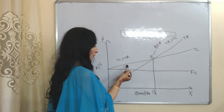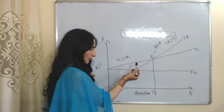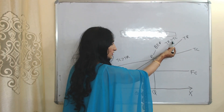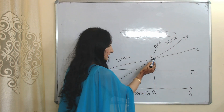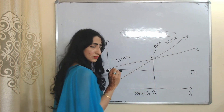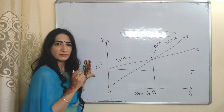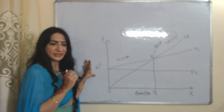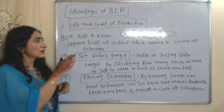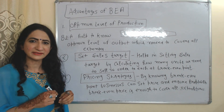Before point E, you can see total cost is more than total revenue. After point E, total revenue is more than total cost. But at point E, total revenue is just equal to total cost — that is why E is called the breakeven point. Now let's look at the advantages of breakeven analysis. The first advantage is optimum level of production — breakeven analysis helps to decide the optimum level of production needed to cover all expenditures.